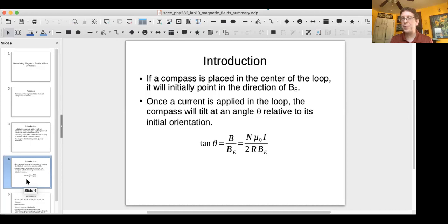What we're going to do is for N equals 5, N equals 10, and N equals 15, we're going to plot the tangent of theta versus I. That slope is going to equal N times mu naught divided by 2R BE. We're going to use that slope to calculate the horizontal component of the Earth's magnetic field.